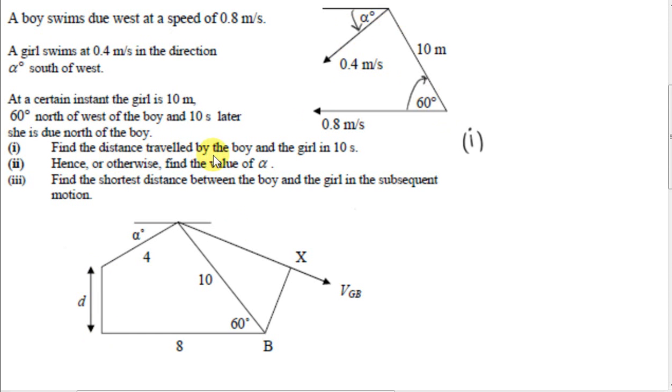In the first question, we are going to get the distance travelled by the boy and the girl in 10 seconds. Well, in one second, the girl travels 0.4 meters because her speed is 0.4 meters per second. So in 10 seconds, she will travel 10 times 0.4, which is 4 meters. This is just time multiplied by constant speed gives us distance travelled.